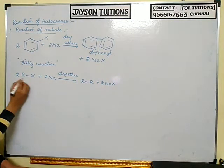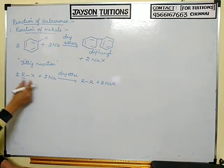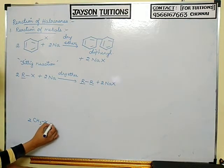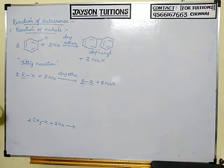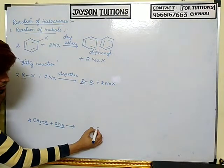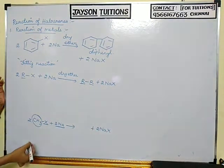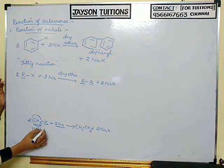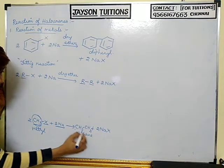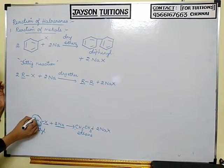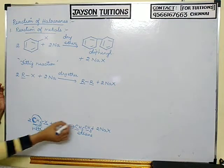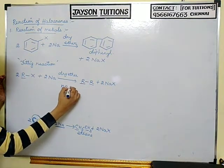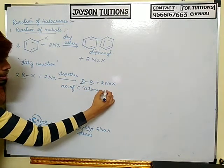In the reactant molecule there is only one R, but in the product it doubles. For example, if I take CH3X plus 2Na in dry ether, the 2Na and 2X form 2NaX, and the two CH3 groups combine to form CH3-CH3, which is ethane. So a 1-carbon compound becomes a 2-carbon compound — the number of carbon atoms doubles in the product.